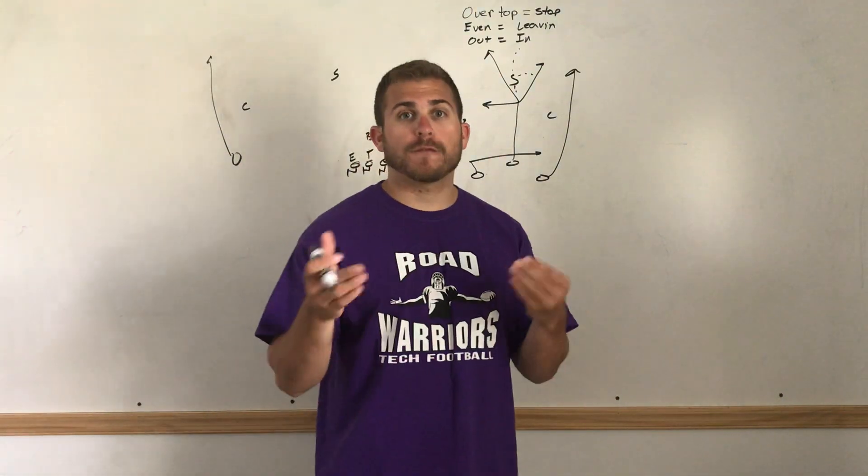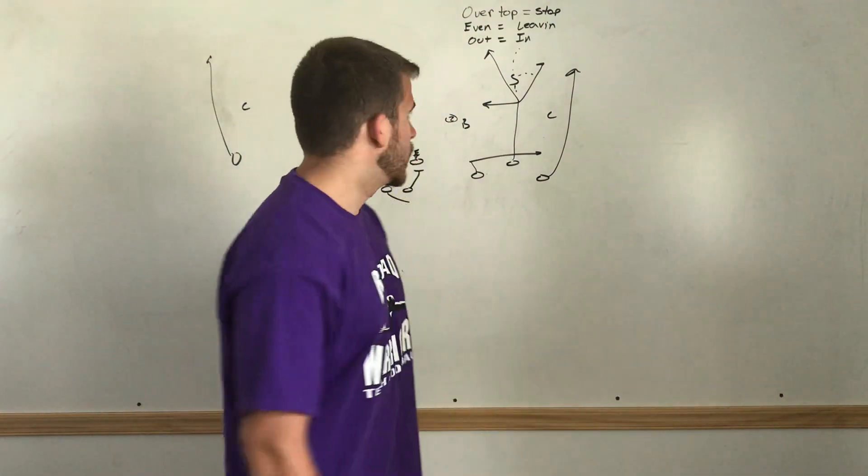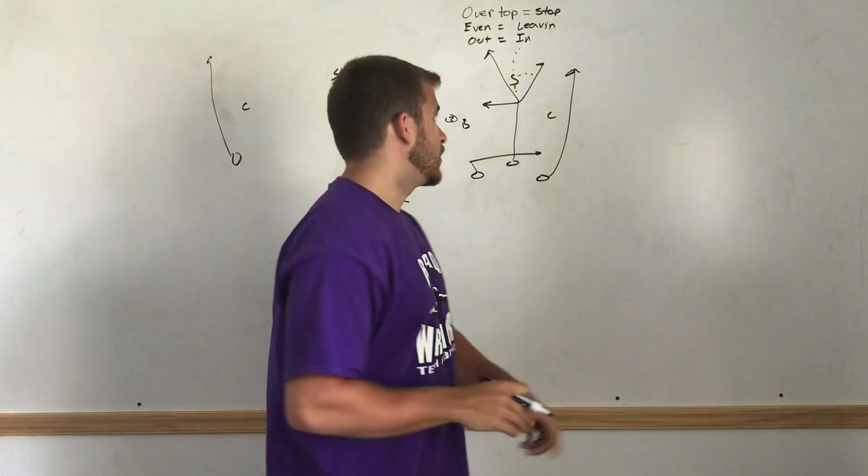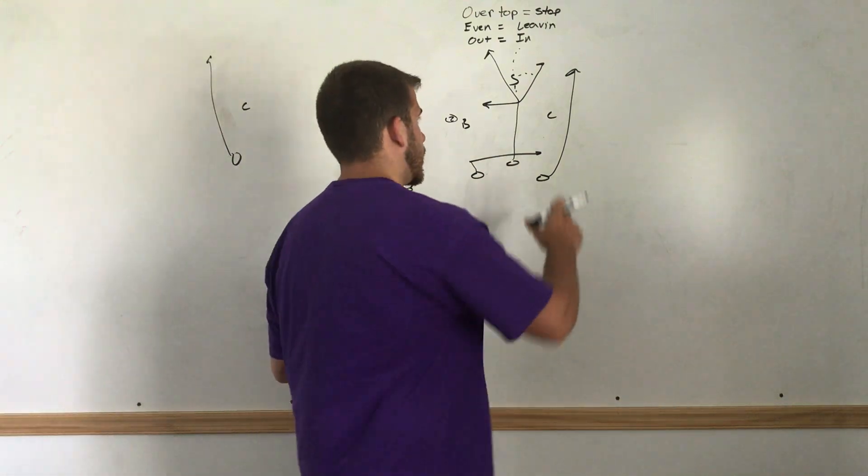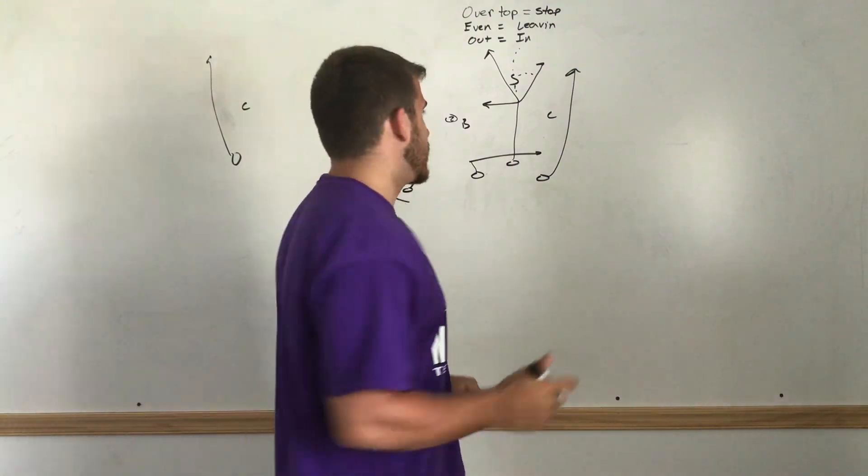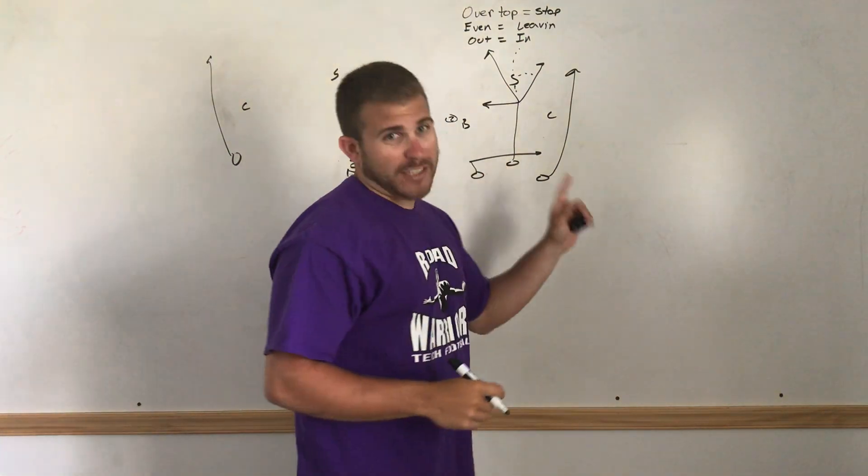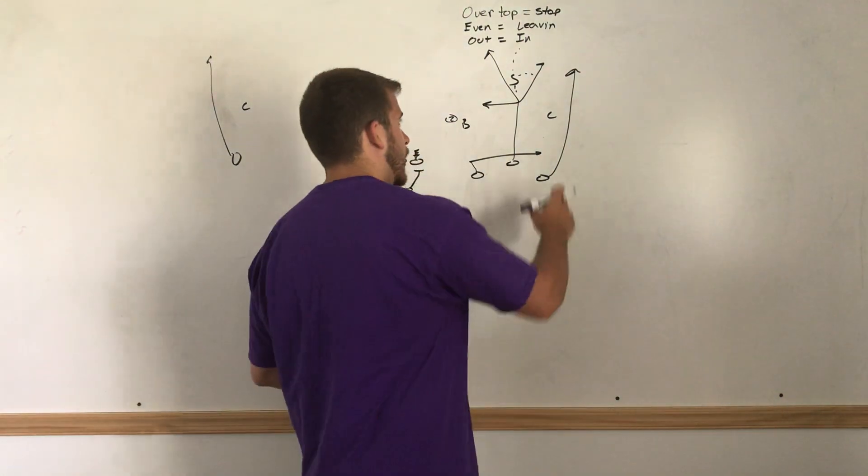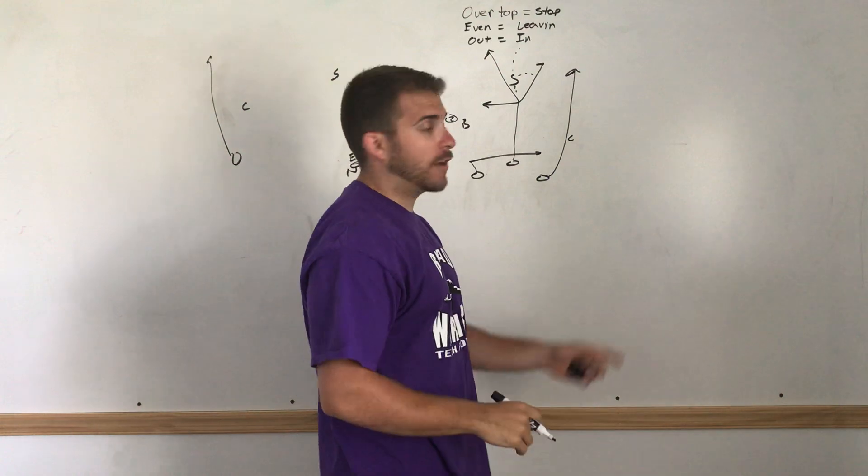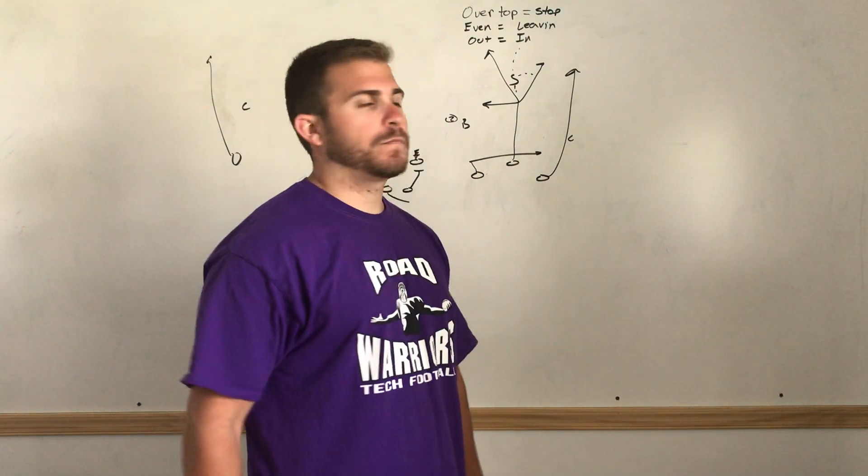All right, now what's the quarterback's read? We have to decipher who the flat defender is. Going back to the two high shell, we have cover two or we have cover four. How I would teach my guys to decipher cover two or cover four would be to look at the corner and how he's playing. If this corner's off the ball and most importantly if he's allowing an outside release by the defender, that's probably cover four. If this corner is playing closer to the ball, he's squatting on a lot of stuff, playing outside leverage and really forcing that number one receiver inside, you're probably looking at cover two.